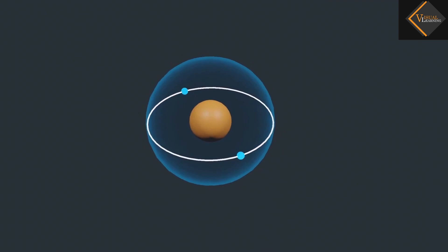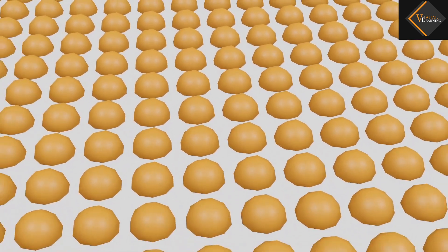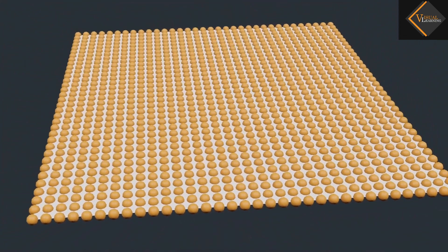Atoms are very small. They are smaller than anything that we can imagine or compare with. More than millions of atoms, when stacked, would make a layer barely as thick as this sheet of paper.